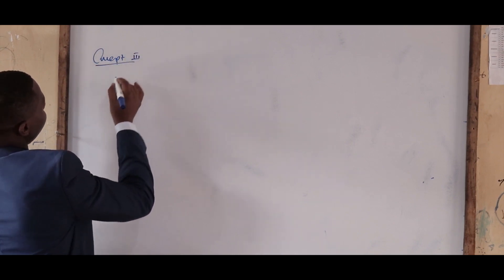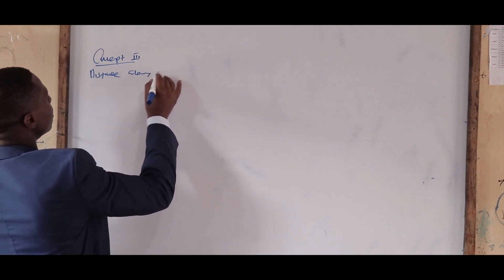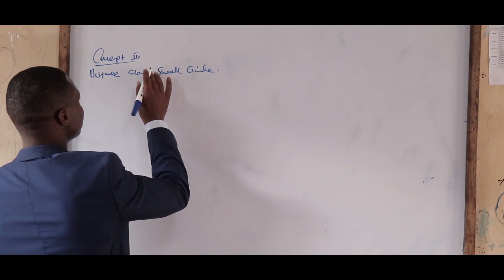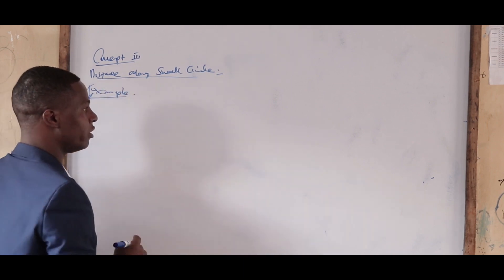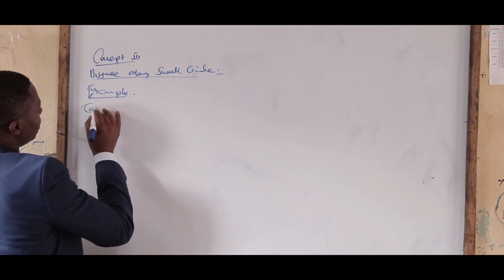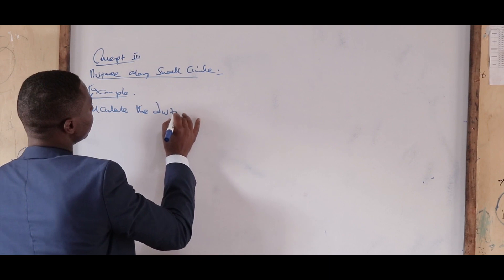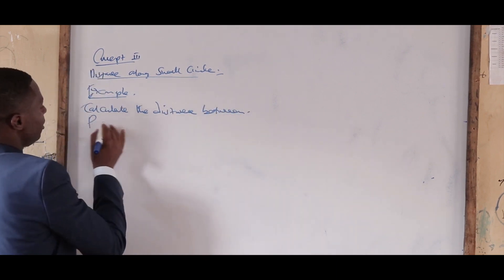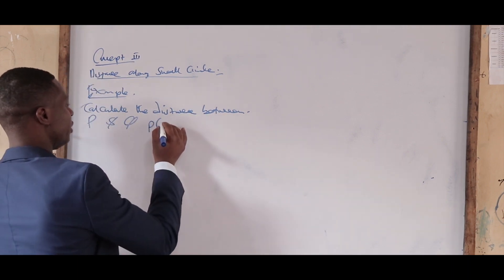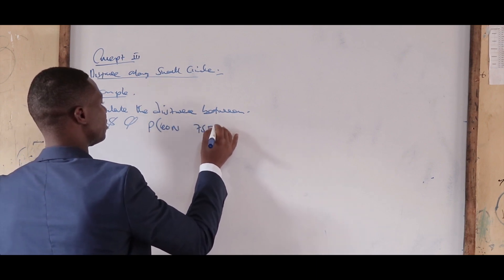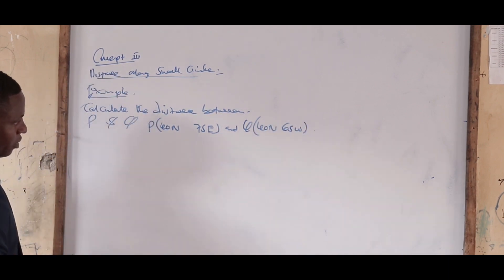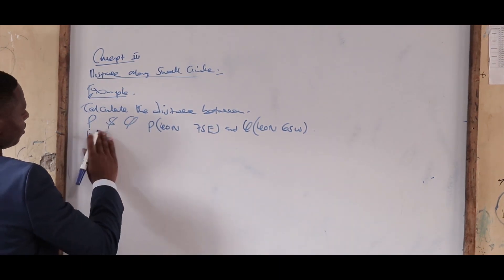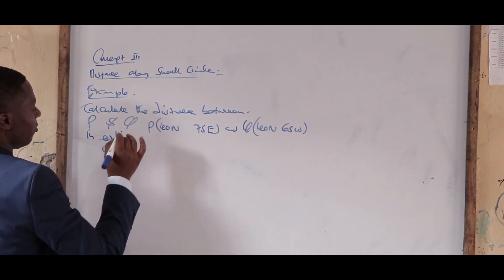Concept number three: calculating the distance along a small circle — that is, along a latitude. For example: calculate the distance between P at 40 degrees north 75 east, and Q at 40 degrees north 65 west, in kilometers and in nautical miles.